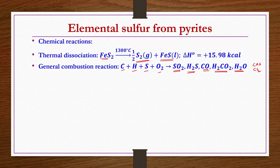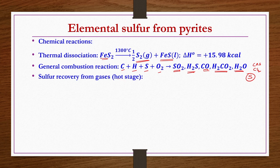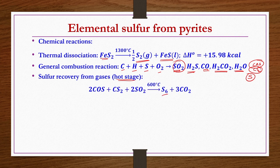From these gases, we recover elemental sulphur S. This recovery takes place in two stages. One stage is the hot stage, where catalytic reaction takes place at approximately 600°C. In this hot stage catalytic converter, SO2 reacts with carbonyl sulphide (COS) and carbon disulphide (CS2) to give sulphur vapours and carbon dioxide.